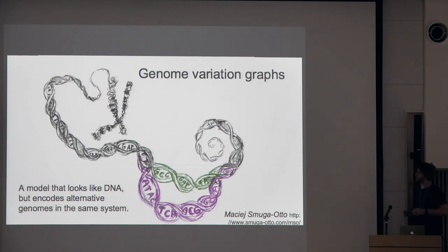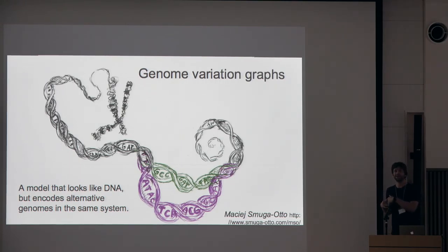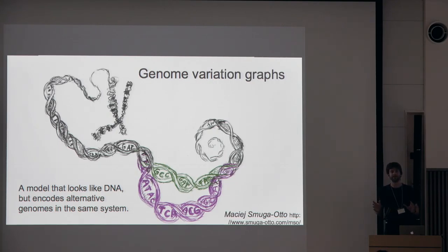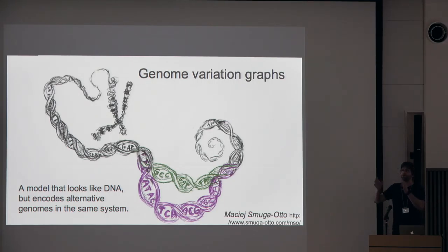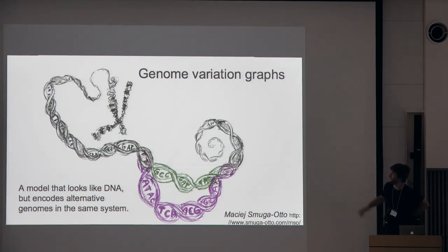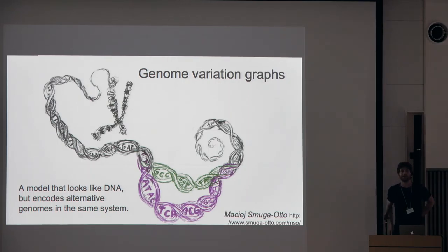Seeing that this is a big problem has inspired development in the past few years into what we're calling variation graphs, or genome reference graphs, or genome graphs. The basic idea is you have some mathematical model that looks a lot like DNA in that it has two strands. You can think about inversions against it and about multiplicities where there might be bifurcations in the system — you could go left or right, and if you go left you're one genome, if you go right you're another. This sketch illustrates that: the purple and green sequences are different, but the rest of the genome is very similar. So we have this system that encodes both variation and sequence at the same time.